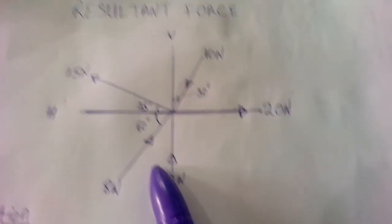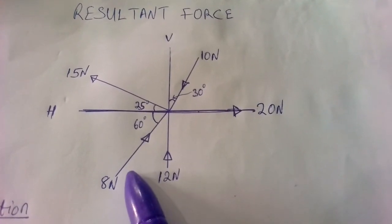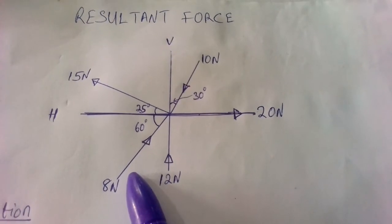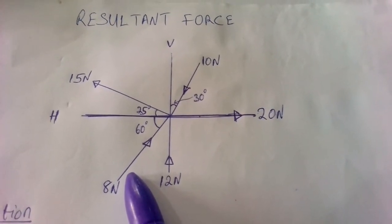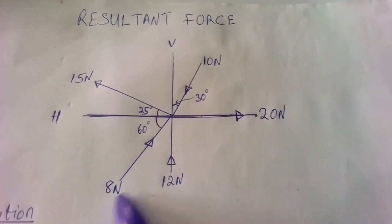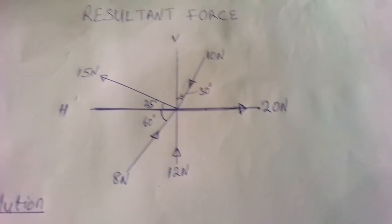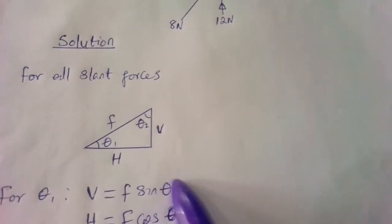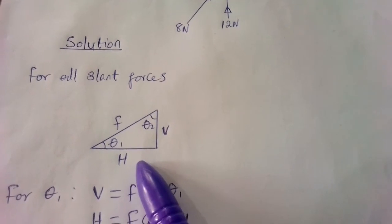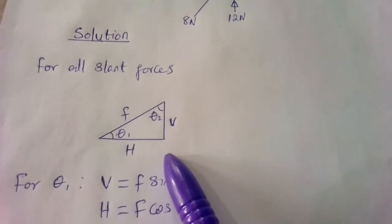Any force that is in a horizontal or vertical direction always has an angle of zero. For us to calculate our resultant, all the slant forces must be converted into both vertical and horizontal components, because we can only make use of them once they are resolved onto the vertical axis and horizontal axis. For all slant forces we should form a triangle — we should generate a triangle from every slant force.